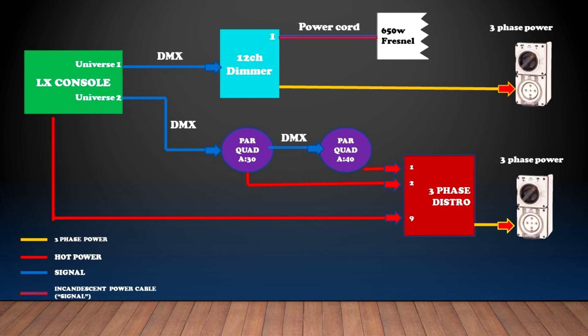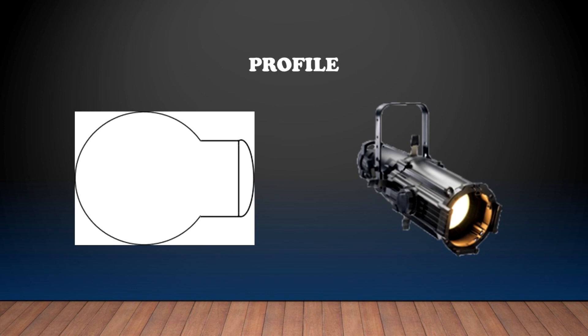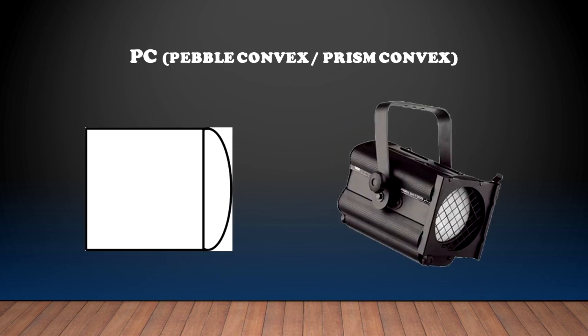And there we go — that is our whole signal flow as well as power flow. Now, here are a couple of pictures I've included to help you when you're drawing your own signal flow. In general, that is what we use for incandescent lights, but feel free to use whatever you'd like as long as you label them so everyone knows what they are. To start off, here we have the Fresnel, then we have the Profile, Flood, PC, and the Parcan.